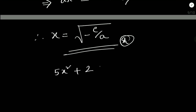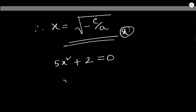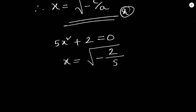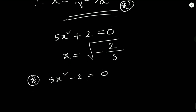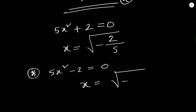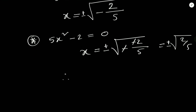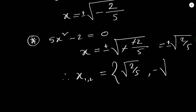For example, 5x² + 2 = 0 gives x = √(-2/5), which is not a real number — so this equation has no real solution. But for 5x² - 2 = 0, we get x = √(2/5), which is real. Since a quadratic equation has two solutions, do not forget to include both plus and minus: x = ±√(2/5).